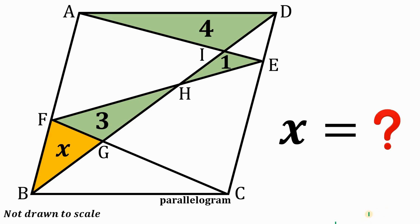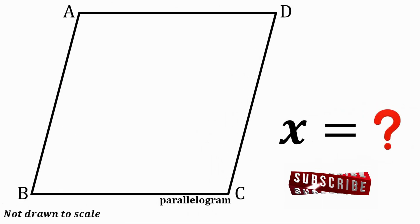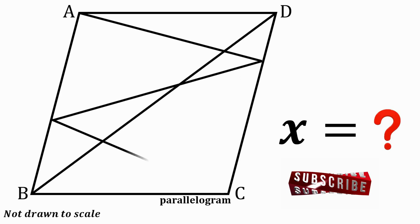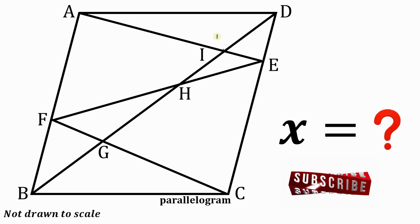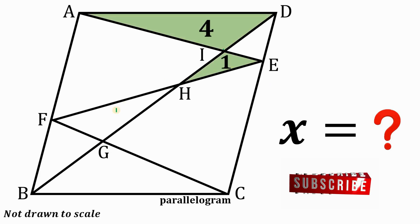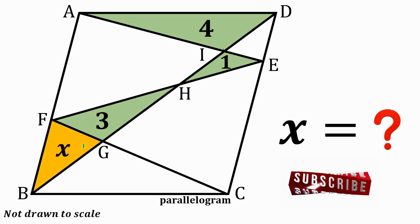Can you solve this geometry challenge? Given parallelogram ABCD — and this figure is not going to scale — let's draw some segments and name some important points: E, F, G, H, and I. The area of this triangle is 4 square units, the area of this triangle is 1 square unit, and the area of this triangle is 3 square units. What is the area of this orange triangle, represented as X?